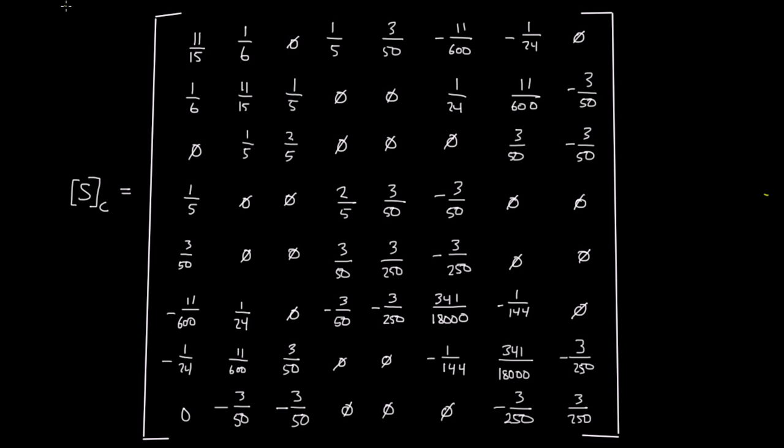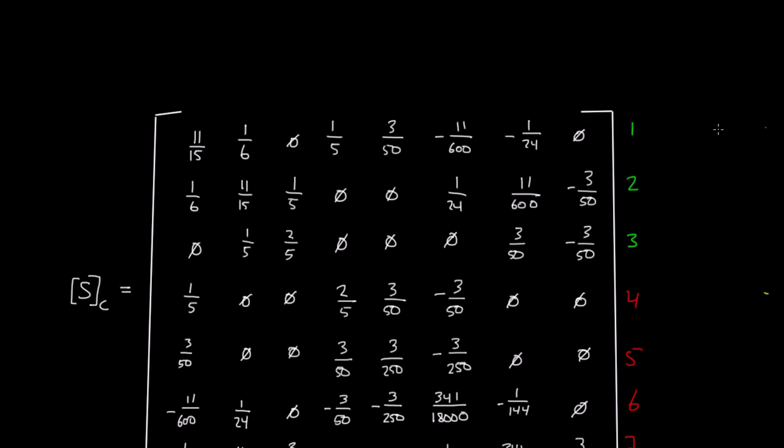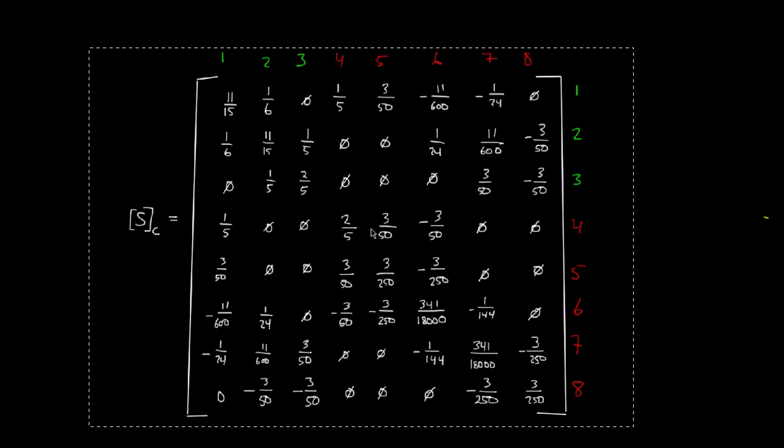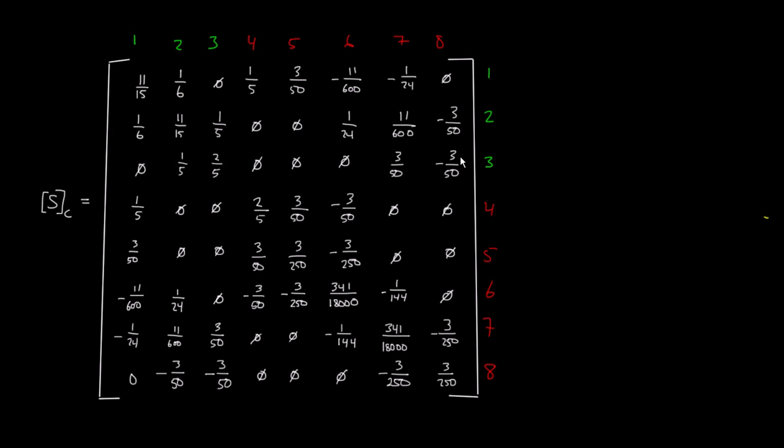This matrix is special because this matrix actually has 4 submatrices within this matrix. Before I get into those, I'm actually going to label the rows and columns according to our degrees of freedom: row 1, 2, 3, 4, 5, 6, 7, 8, and then up here 1, 2, 3, 4, 5, 6, 7, 8.